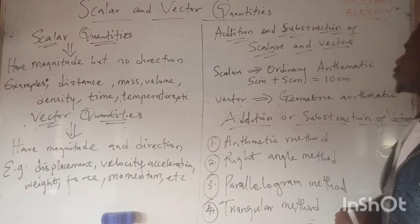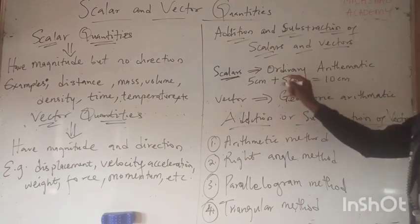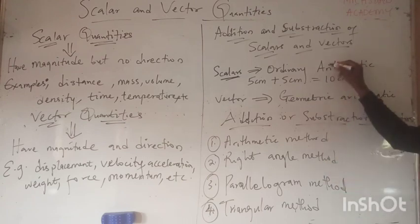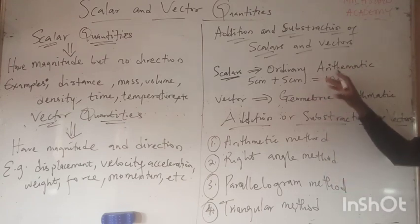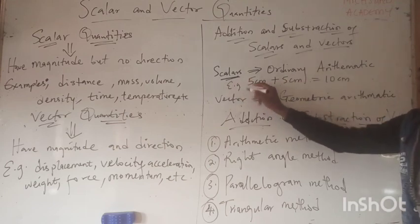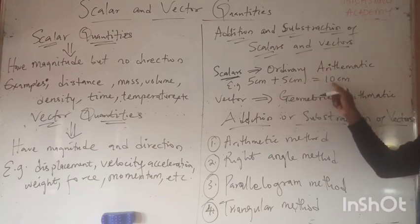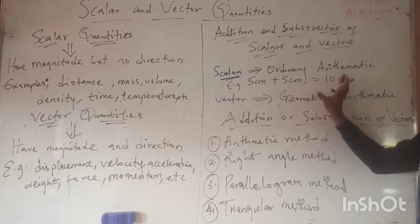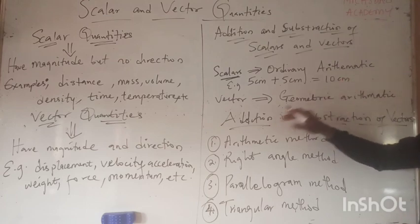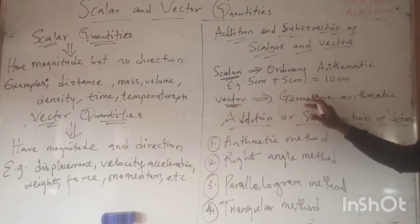For scalars, we use ordinary arithmetic to operate on them. For example, 5 centimeters plus 5 centimeters equals 10 centimeters. We do not consider direction, which makes the arithmetic simple. For vector quantities, we use geometric arithmetic.